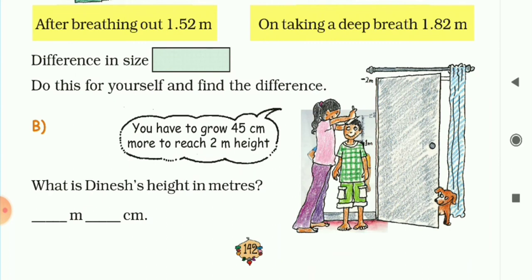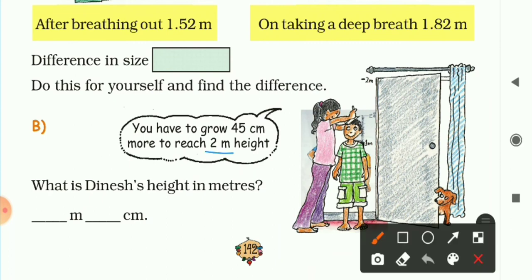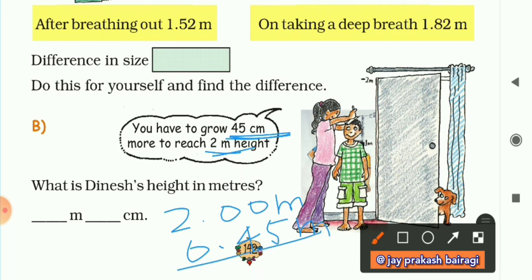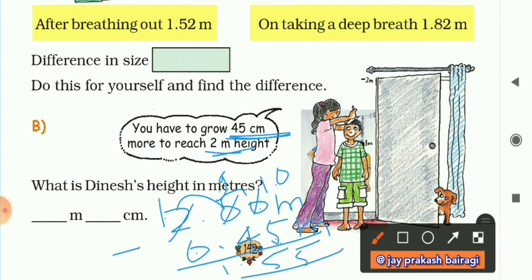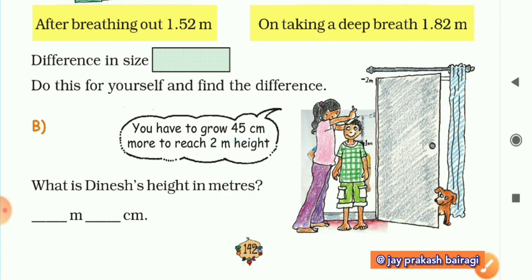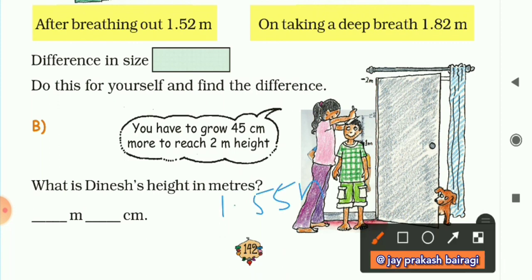Method 2: convert both numbers to meters. 2 meter is written as 2.00 meter. 45 centimeter is 0.45 meter. Now subtract: 0 minus 5, we can't subtract, so take a borrow — 10 minus 5 is 5, 9 minus 4 is also 5, and 1 minus 0 is 1. So we get 1.55 meter. The height of Dinesh is 1.55 meter.